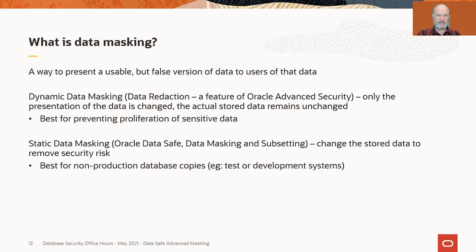With data redaction, policy controls who sees the unredacted data and who sees the redacted data — you can display it both ways. With static data masking — which I'm just going to call data masking from now on — you actually change the stored data. So what was a credit card number may still look like a credit card number, but it's not what was stored there before. The classic use case is development and test environments.